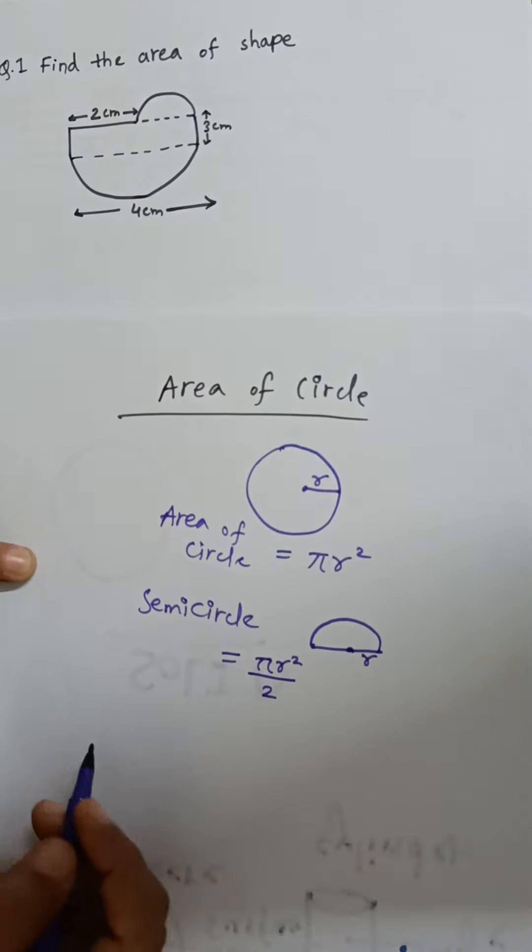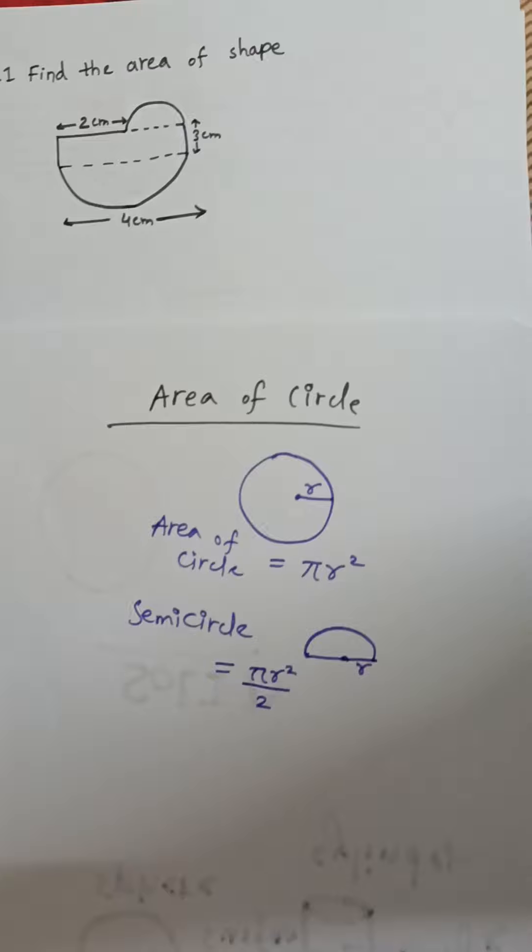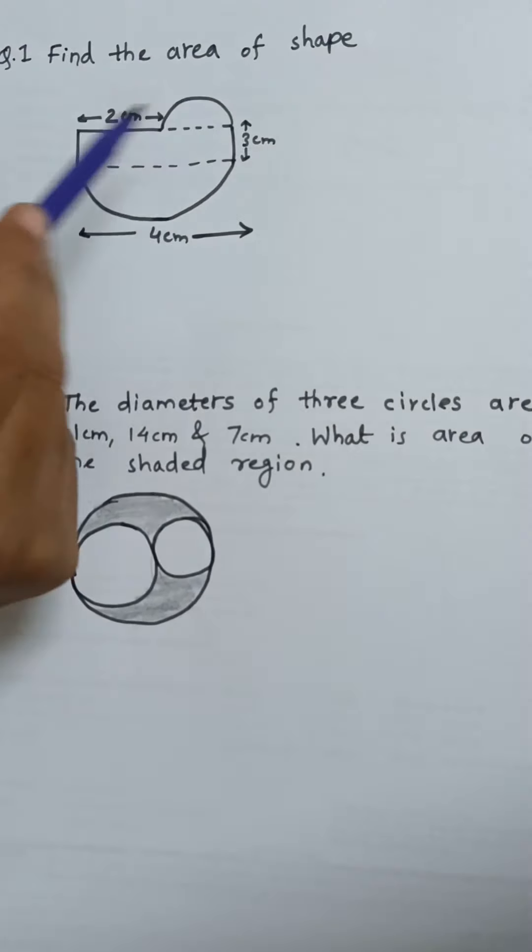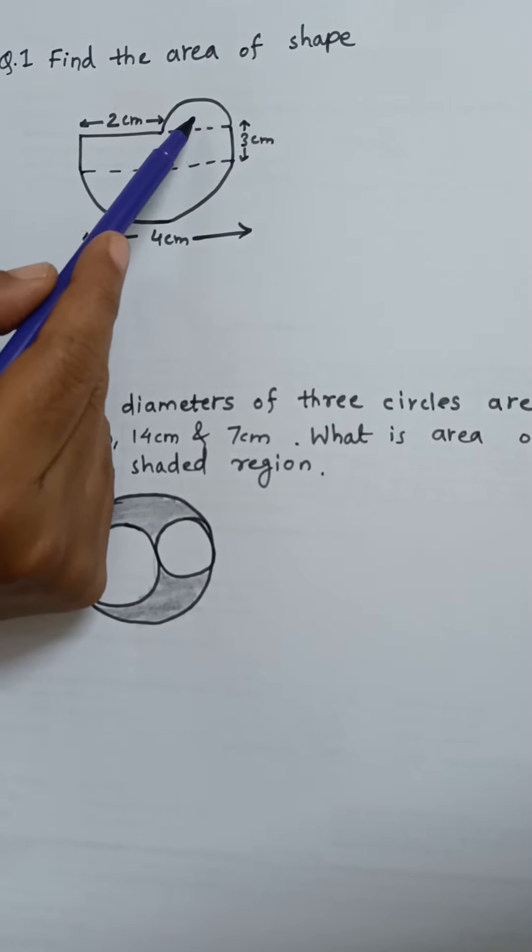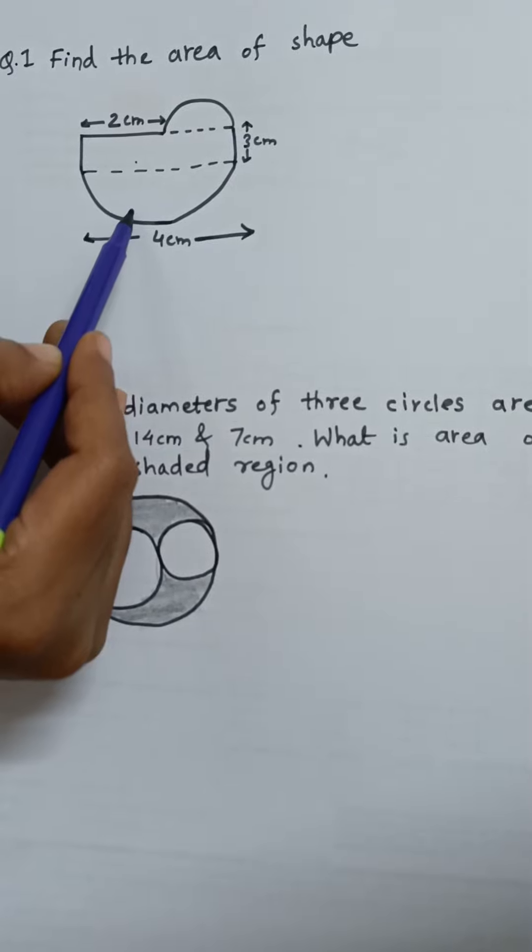Now let's see examples. The first question is find the area of the shape. As you can see, this shape contains one semicircle here, one rectangle, and one more semicircle.